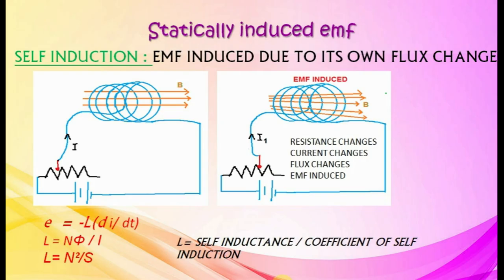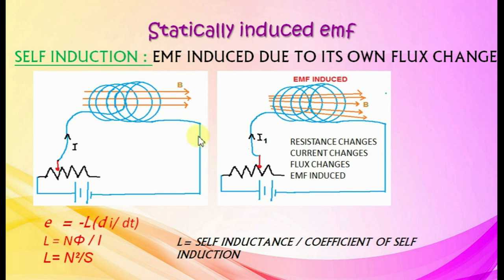Statically induced EMF — self-induction: EMF induced due to a coil's own flux change. When resistance in the circuit changes, current changes, which changes flux around the conductor, inducing an EMF. This EMF is E equals minus L di by dt. L is self-inductance or coefficient of self-induction. L equals N phi by I. L equals N squared by S, where S is the reluctance.